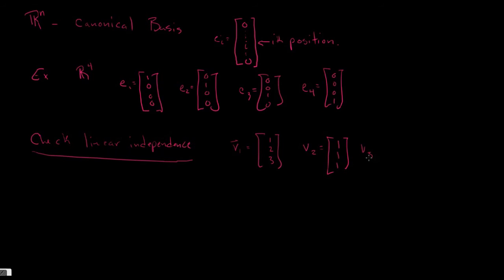And then finally, we'll have V3. So V3 is going to be the vector where we take, let's take this time, two, three, and five. All right.